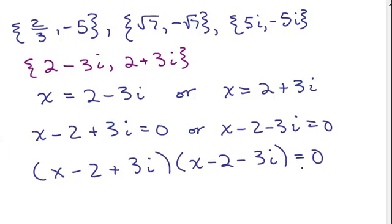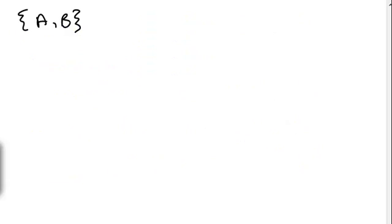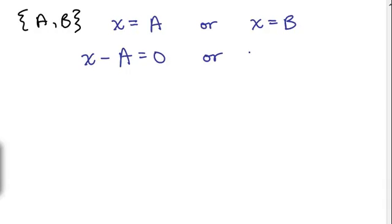So instead, let's see what would happen if the solutions were A and B. So if the solutions are A or B, the first step would have been that that came from X equals A or X equals B. So X minus A equals 0 or X minus B equals 0. If we write those factors, X minus A times X minus B.